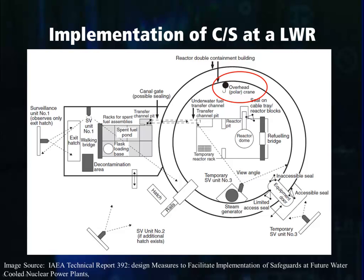An additional containment and surveillance mechanism that could be utilized at this facility are radiation detectors. These radiation detectors might be placed along the transfer canal between the reactor pool and the spent fuel pond. By placing these detectors in the transfer canal, the IAEA can monitor the detectors to determine if any fuel has been moved through the canal. These radiation detectors can also be connected to a piece of video surveillance equipment. Whenever the detector registers radiation — which would typically mean that a piece of fuel is moving through the canal — this would trigger the video surveillance to capture an image or a series of images until the registered radiation has ceased.